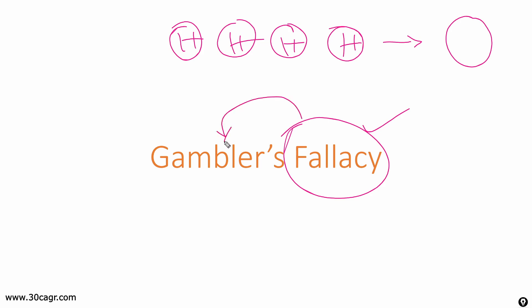We tend to believe certain statements which are not really true. Those beliefs we call as fallacy. Now why are we tying up this with gamblers? Generally if you observe in European countries or in United States, there are so many people who play casino.